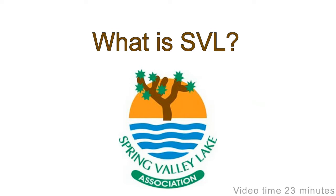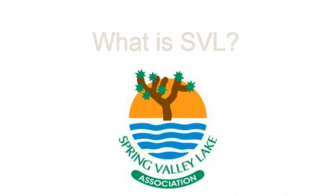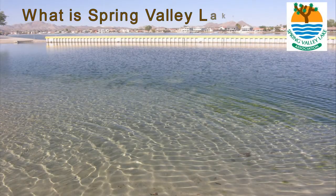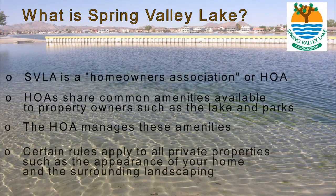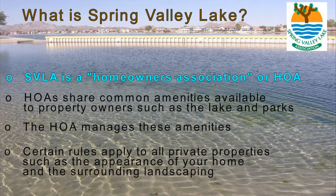Hello again. This chapter will explain a little about how Spring Valley Lake is organized and managed. As you may already know, SVL is organized as a Homeowners Association or HOA. We are considered a large HOA. An example of a small HOA is a condominium or a housing project with less than 50 lots or homes. SVL has about 4,200 lots.